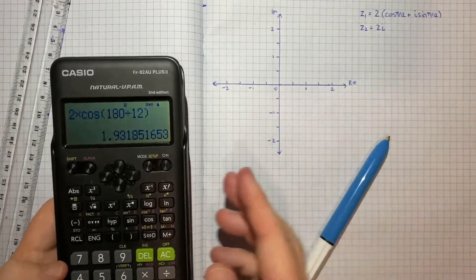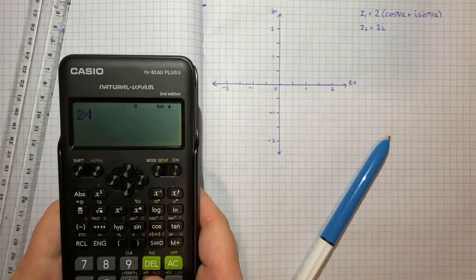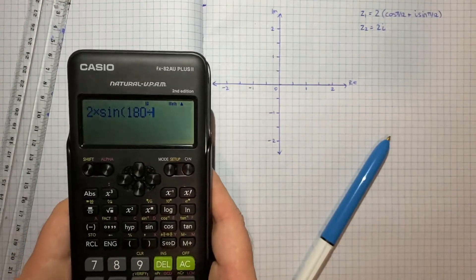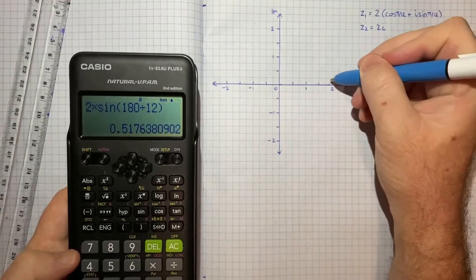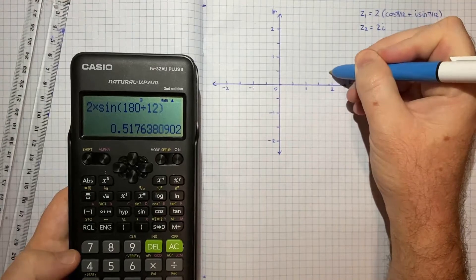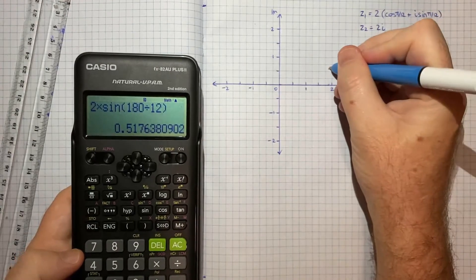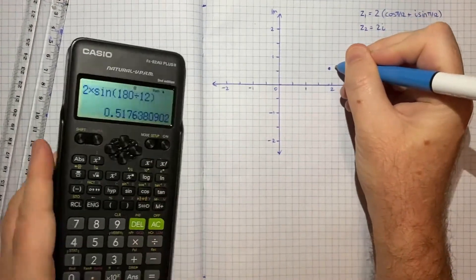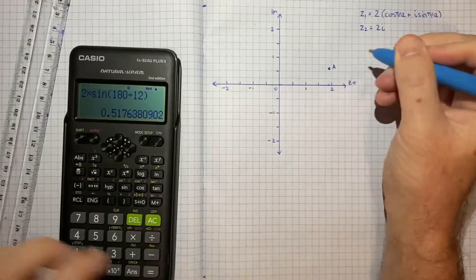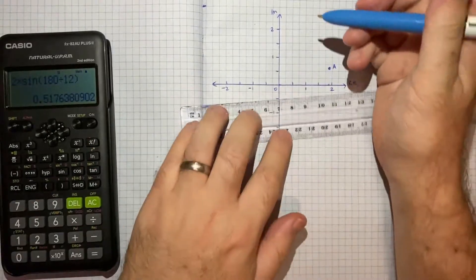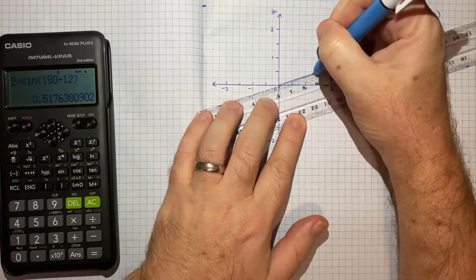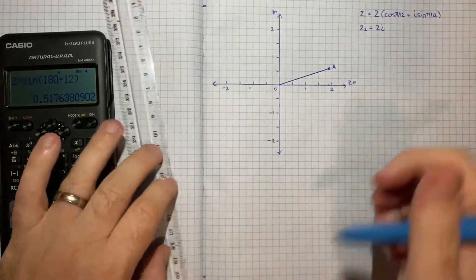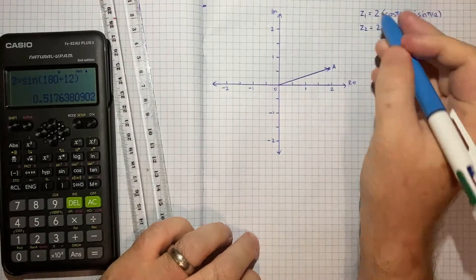And then 2 times sin 180 divided by 12. That's about 0.51. So that's going to be about there. So we'll call that point A. And this vector from the origin to A, that is the vector that represents this complex number z1.